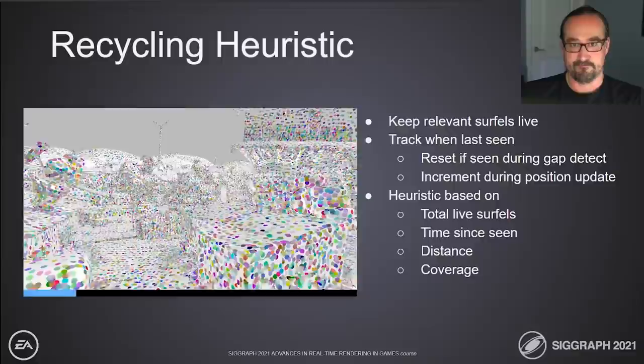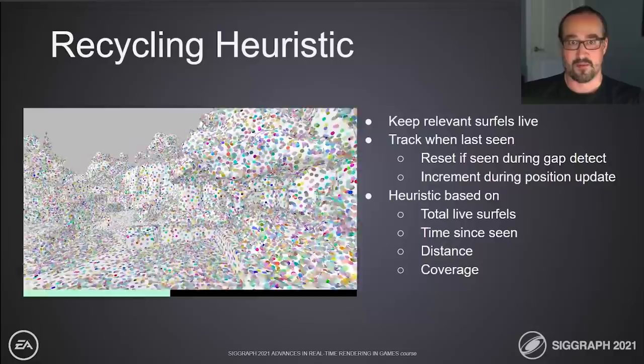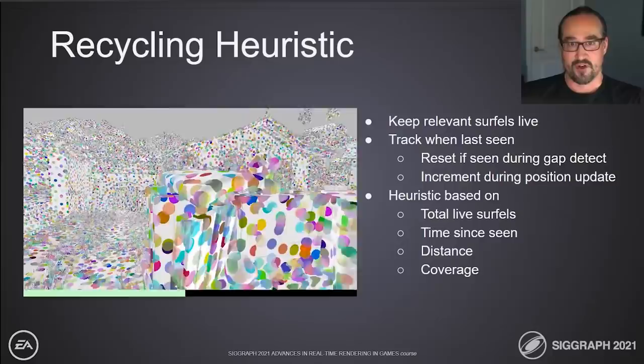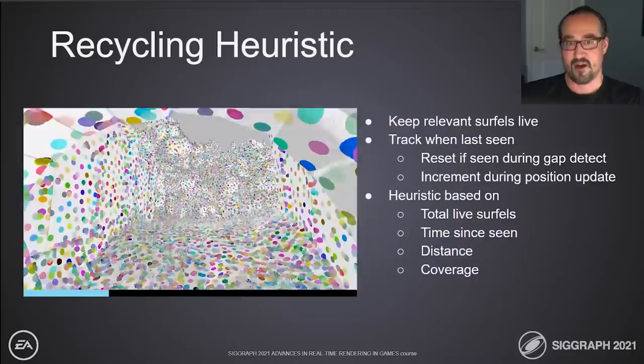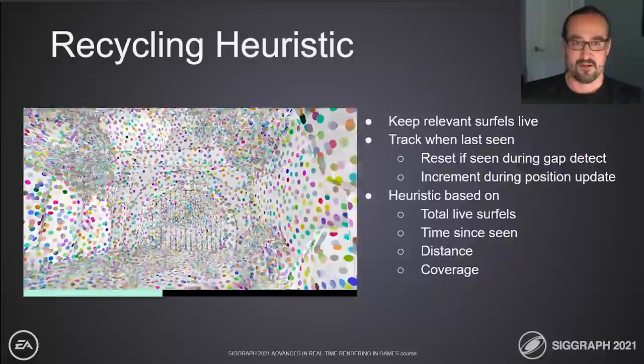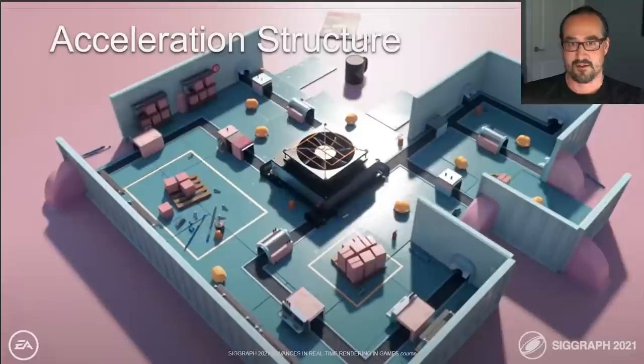In the video, a bar at the bottom shows the total number of live surfels out of the total global budget. While the recycling algorithm keeps the number of live surfels in check, we don't want to recycle surfels unnecessarily — that would throw away the hard work done to calculate their lighting. For this reason, we employ a recycling heuristic based on factors including how many surfels are currently live, when the surfel last contributed to the lighting of the scene, and how far away the surfel is. These factors are combined and compared to a random number from a uniform distribution, giving surfels that are less relevant a higher probability of being recycled.